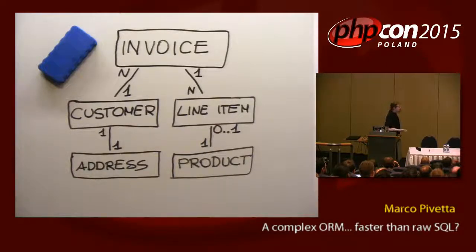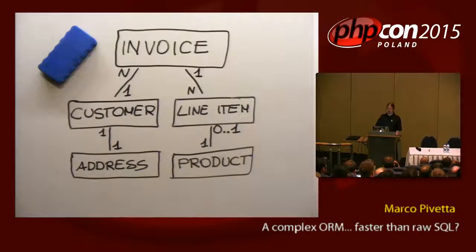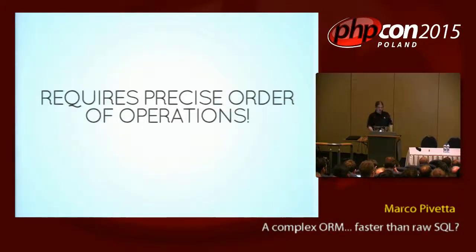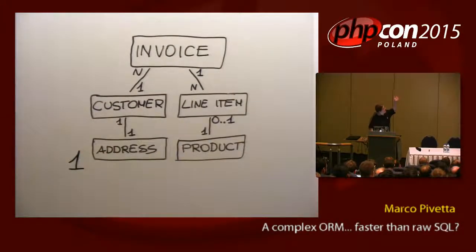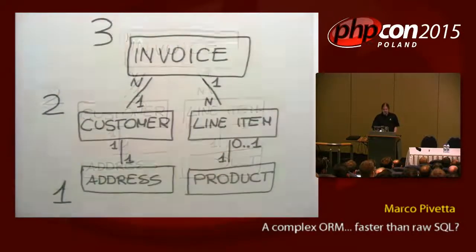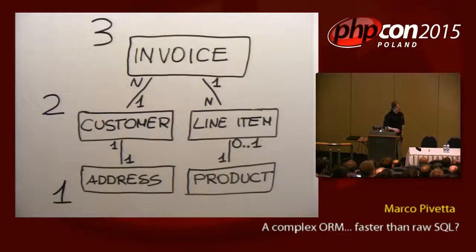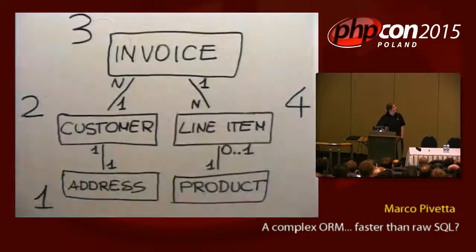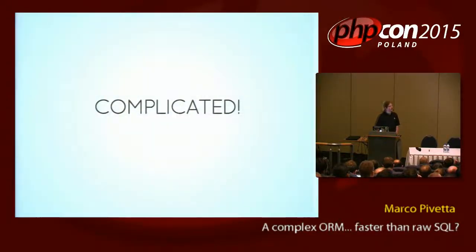This means that any time you do an insert to save all this, you're going to do a series of operations in a very precise order. First of all, you need to save the address, because it's your first dependency. Then you need to save the customer, make sure the customer exists. Then you need to create the invoice — assuming your products are already in the database, because you're not going to create the products during a checkout. Then you create the line items. This pretty much is the loop, and it is freaking complicated.